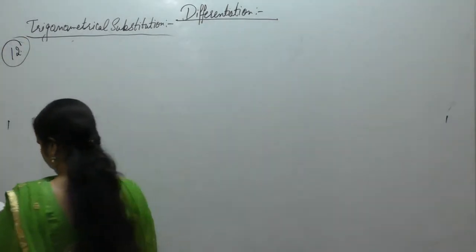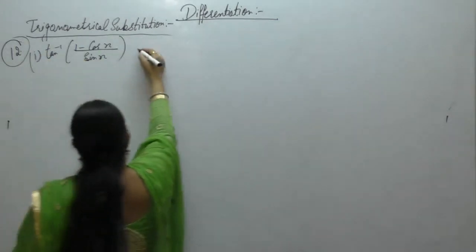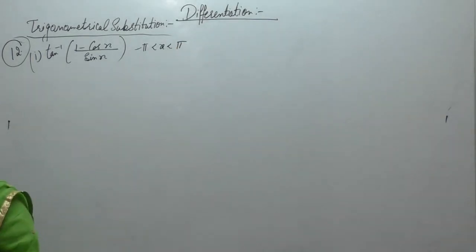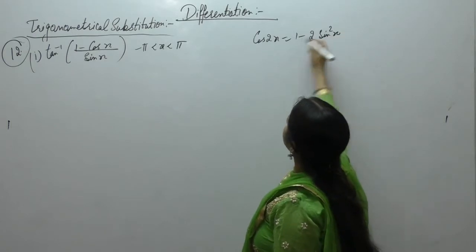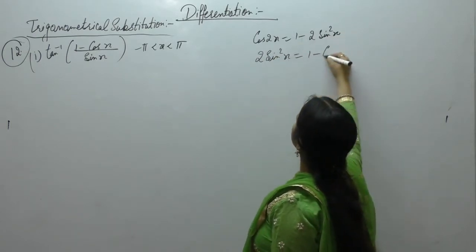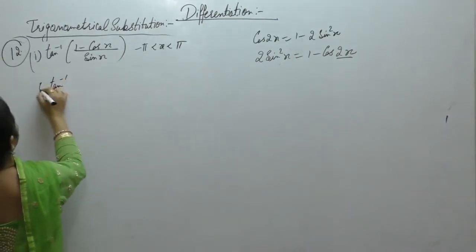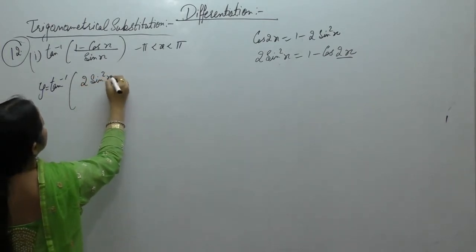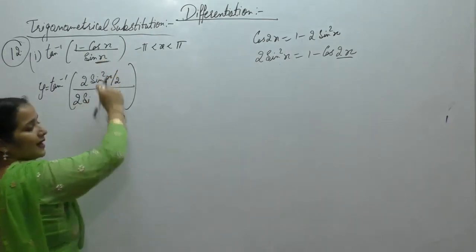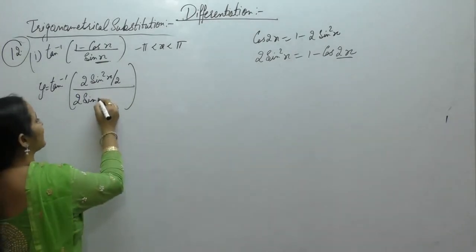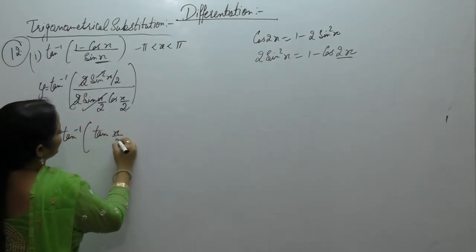Question number 12: differentiate the following function with respect to x. First part: tan inverse of (1 minus cos x), where minus π less than x less than π. Using the formula cos 2x equals 1 minus 2 sine squared x, we get 2 sine squared x by 2. The formula for sine 2 theta is 2 sine x cos x, so with half angle we get 2 sine(x/2) cos(x/2). The 2 cancels, giving tan inverse of tan(x/2).